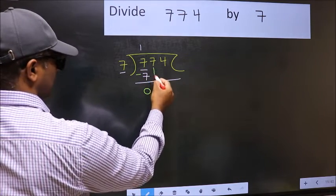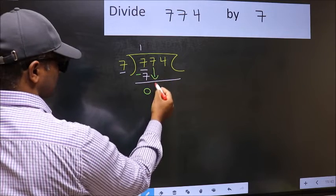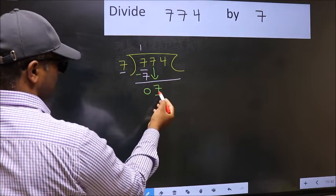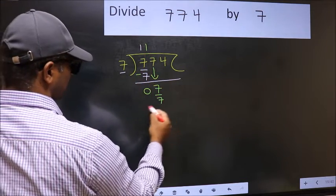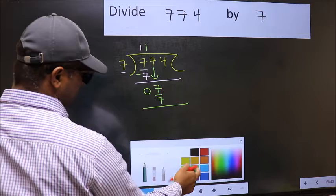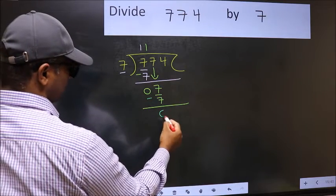After this, bring down the beside number. So 7 down. Now 7, when do we get 7 in the 7 table? 7 once is 7. Now you should subtract. 7 minus 7, 0.